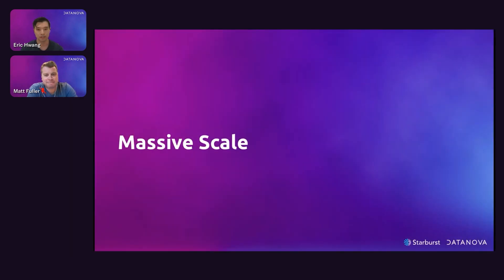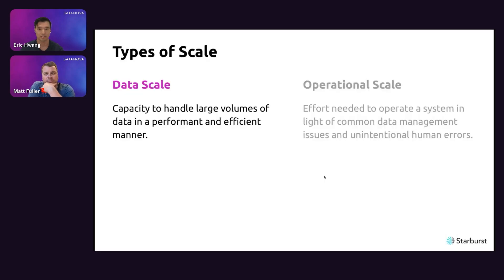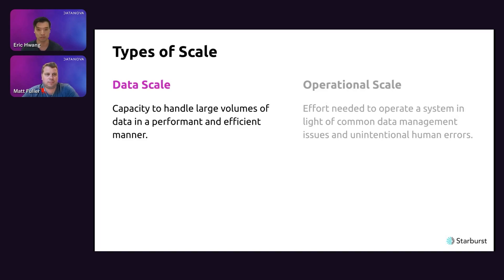Now let's talk about how this technology scales. When we talk about scale, people typically think of data scale — a system's ability to handle large volumes of data in a performant and efficient way. But we'll also be talking about operational scale — the amount of effort required to sustain such a system given data management issues and unintentional human errors. That's the thing that often gets missed. Let's start by looking at data scaling challenges when moving data from a Kafka topic into an Iceberg data lake.